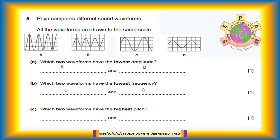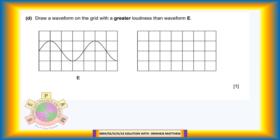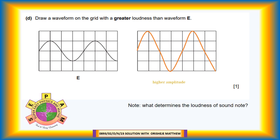Question 5c: Which two waveforms have the highest pitch? Wave A and wave B. Note: Pitch of sound is affected by the frequency. The higher the frequency, the higher the pitch. Question 5d: Draw a waveform on the grid with a greater loudness than waveform E. Note: What determines the loudness of sound? The amplitude of the wave. The higher the amplitude, the louder the sound. The wave that will have greater loudness than wave E will have a higher amplitude than wave E.